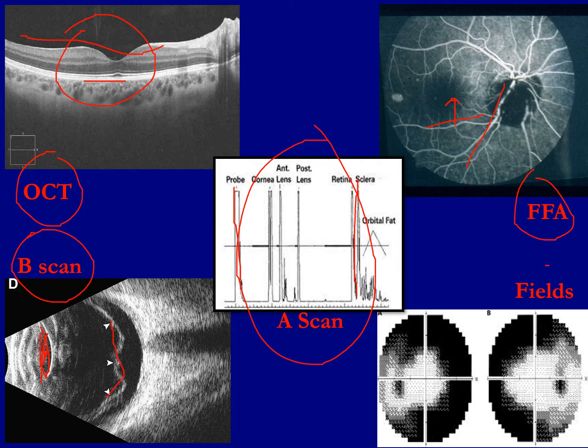This is the visual fields test, used in glaucoma. It tells you how much you can see in the center and in the periphery. This patient cannot see in the periphery, so they have visual field defects. After having this background knowledge, let's start the MCQs.